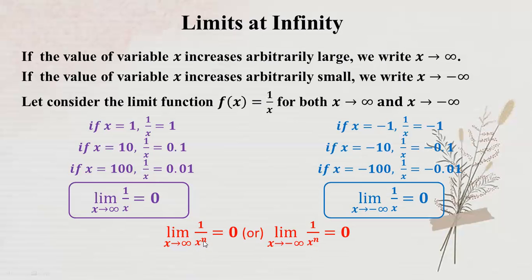Some of you know that x power n — as x approaches infinity, x power n goes to infinity. As a result, 1 by x power n goes to zero.